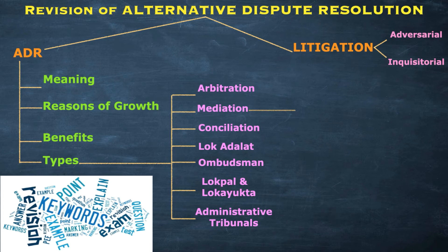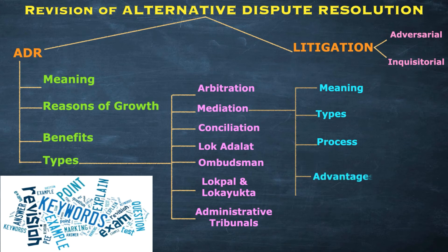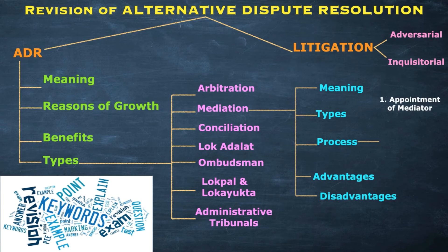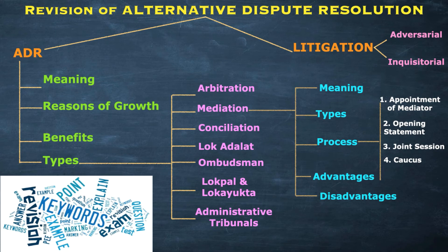Under mediation, the topics covered are: meaning, types of mediation, process of mediation, advantages of mediation, and disadvantages of mediation. Under the process of mediation, we studied five stages: first, appointment of mediator; second, opening statement; third, joint session; fourth, caucus; and fifth, agreement and settlement.